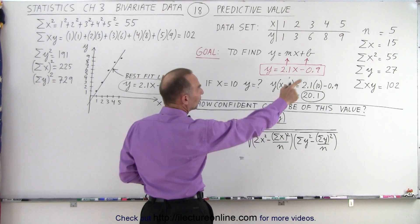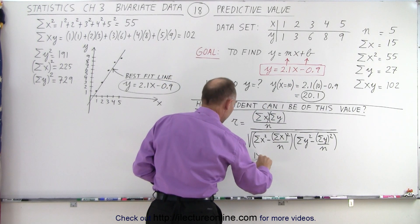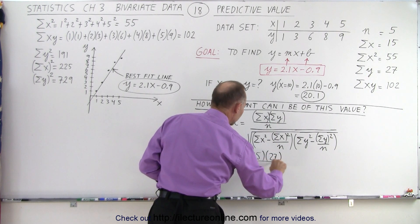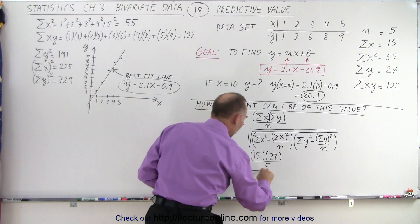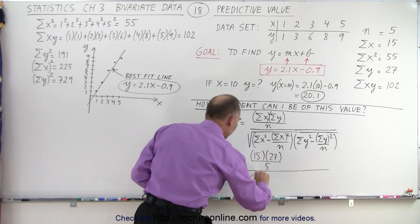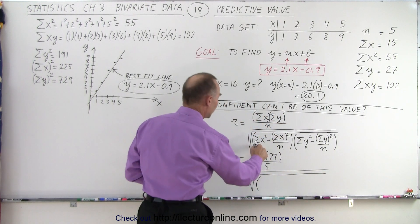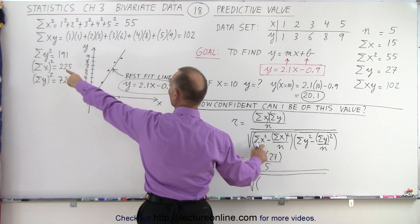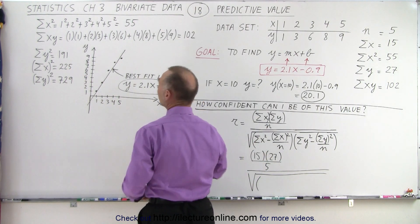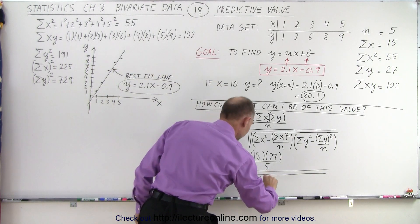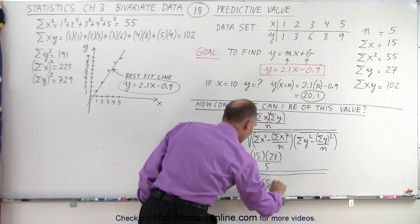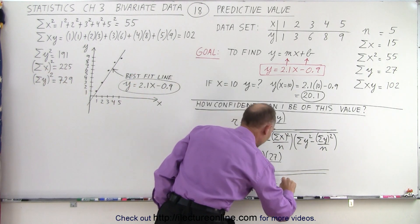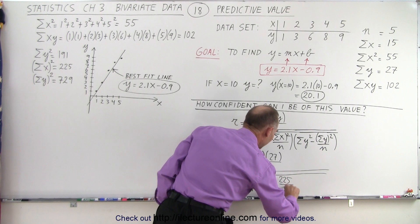So first of all, the sum of all the x's, which is 15, multiplied times the sum of all the y's, which is 27, divided by the number of data points, 5, and take the whole thing and divide it by the square root of, first of all, we have the sum of all the x's squared, which is, that's right here, which is 55. 55 minus the sum of all the x's quantity squared, which is 225, and we divide that by 5.